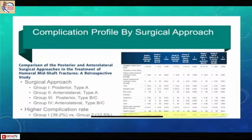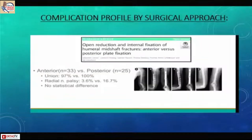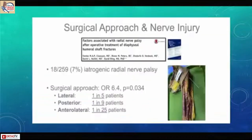Looking at complication profiles by surgical approach, a large study shows a higher complication rate in the posterior approach at nearly 39.2%, compared to 12.5% for the anterolateral approach. A Swiss study found radial palsy was about 3.6% in the anterior approach while it was 16.7% in the posterior approach, though there was no statistical difference in bone union rates.